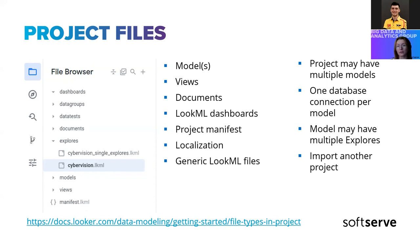So you can work in dev mode with the dev branch and a dev connection. When deployed to production, you change your database connection to the prod connection. The second very important part of a project are views — in Looker they are called views in the file types, but in documentation they are often called tables. Let's assume these are synonyms.